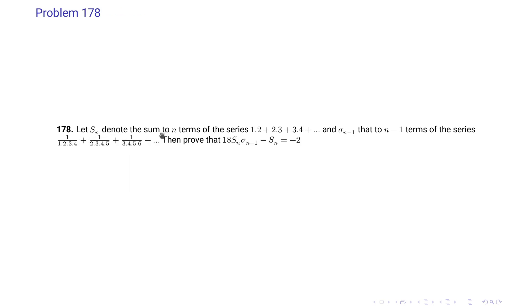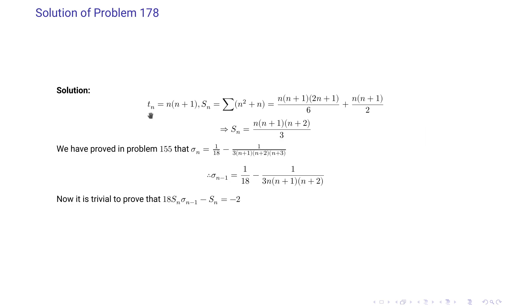Problem 178: Let Sn denote the sum to n terms of 1·2 + 2·3 + 3·4 + …, and σ(n−1) denote the sum to (2n−2) terms of 1/(1·2·3·4) + 1/(2·3·4·5) + 1/(3·4·5·6) + …. Prove that 18·Sn·σ(n−1) − Sn = −2. We have Sn = n(n+1)(n+2)/3. From Problem 155, σn = 1/18 − 1/[3(n+1)(n+2)(n+3)], so σ(n−1) = 1/18 − 1/[3n(n+1)(n+2)]. With these expressions the equality follows directly.